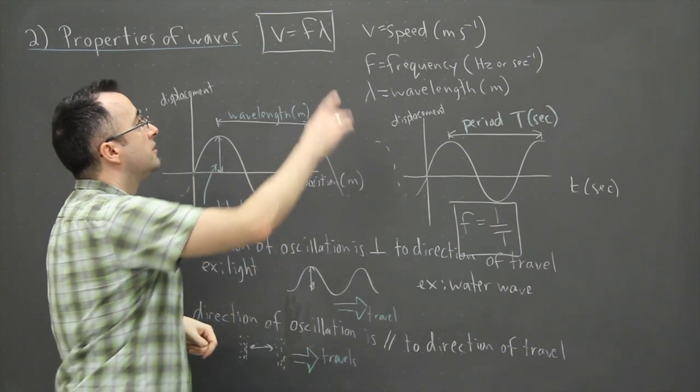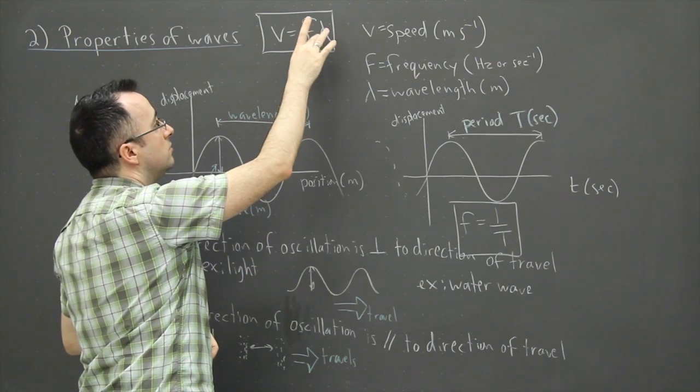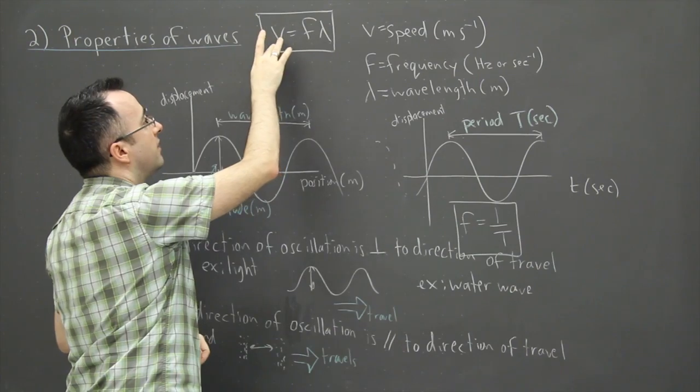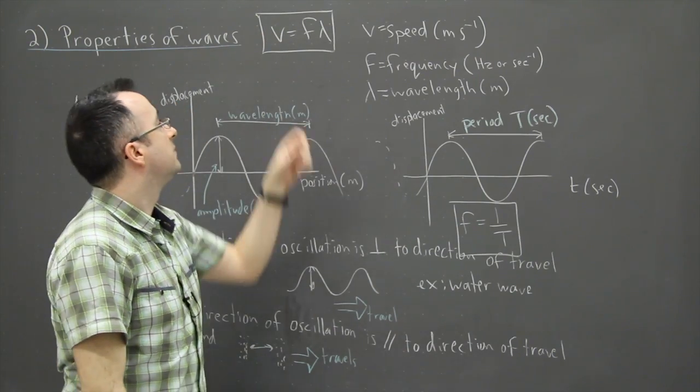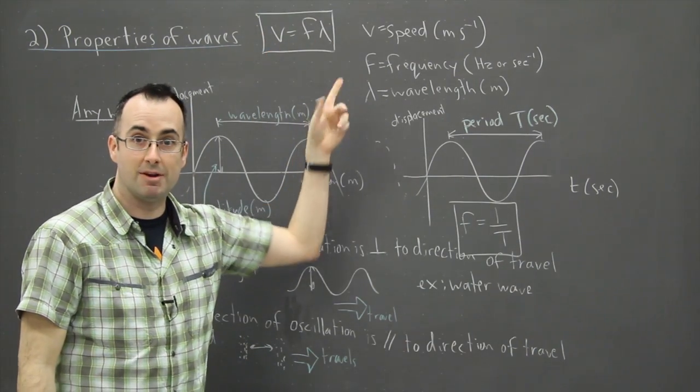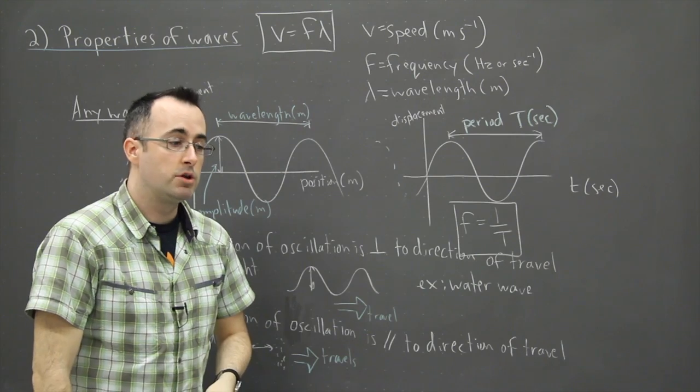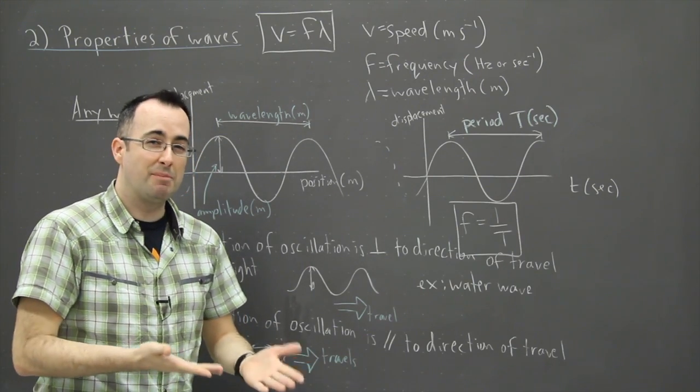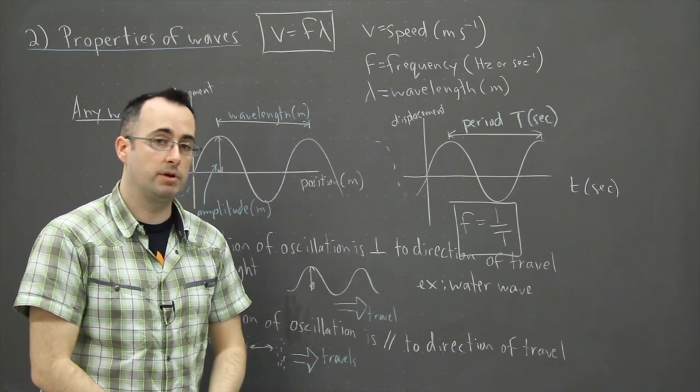The key equation here is V equals F lambda. That's a way to convert from frequency to wavelength or find the speed. Basically, you're normally given two of these variables and you have to find the third. I think those are the key basic definitions and properties of waves.